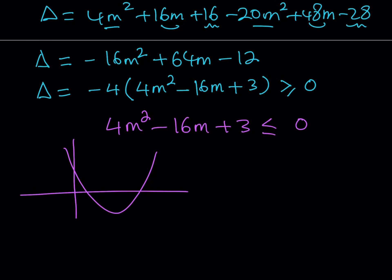And you want this parabola, the y values, to be less than or equal to zero. So you're basically talking about being between the roots here. So if this is m1, and this is m2, your m values need to be in that interval so that this expression here is going to be less than or equal to zero. So that's what we're going to do.